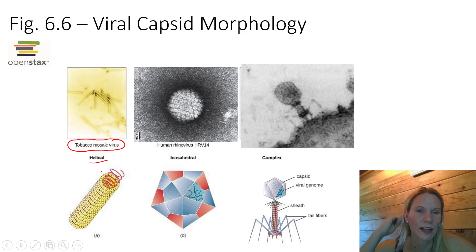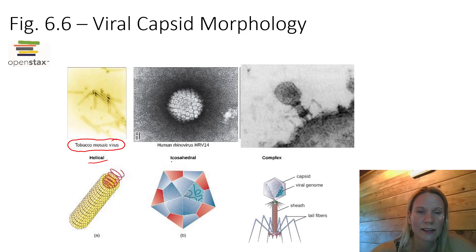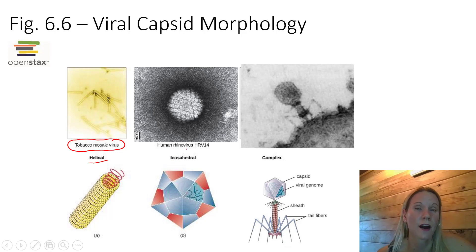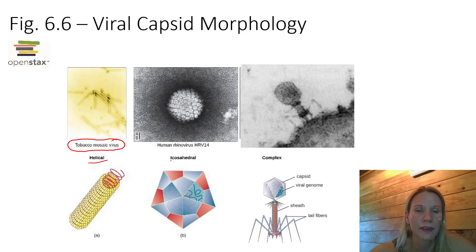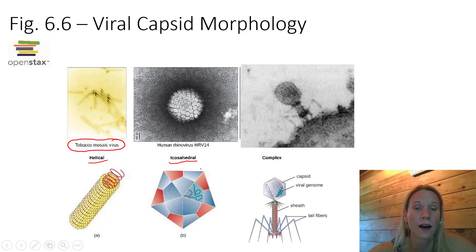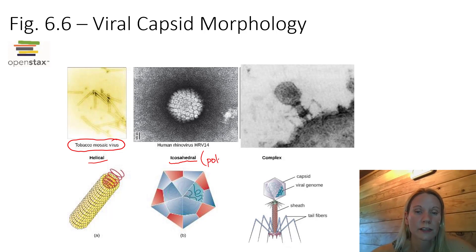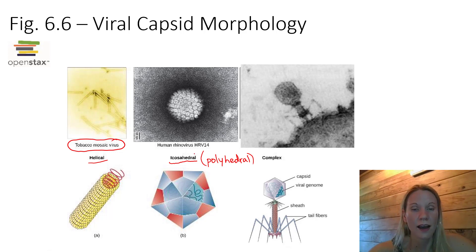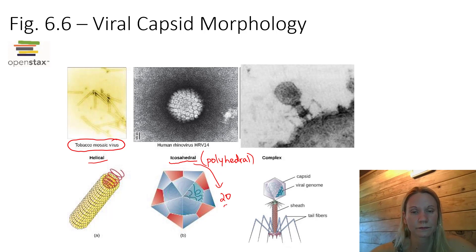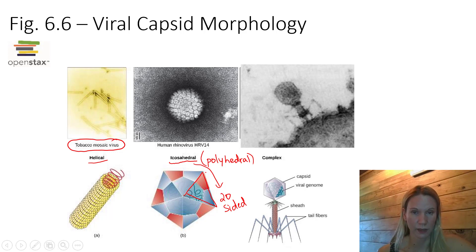Pictured in the middle of the slide we see the human rhinovirus, which is one of the causes of the common cold. There are a number of different viruses that do cause the common cold - rhinovirus is just one of those viruses. The type of capsid that rhinovirus has is called icosahedral, which is classified as polyhedral or many-sided. Icosahedral literally means 20-sided. So remember all of these little triangles that make up the sides of these geometric dome-shaped viral structures. That's icosahedral.